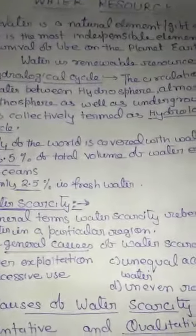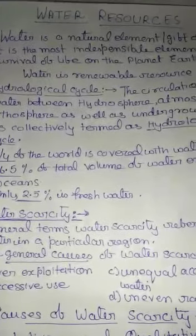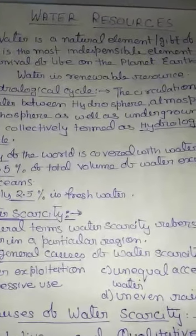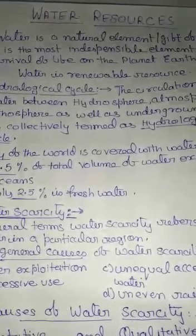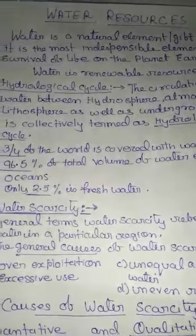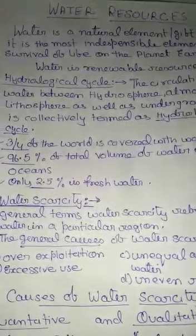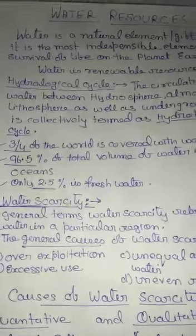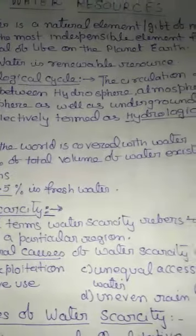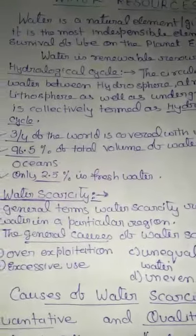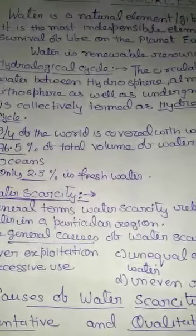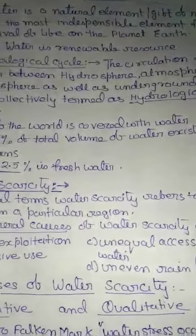For example, when we fetch a bucket of water from a river or pond, it remains a gift of nature. But when the same water is used for generating hydroelectricity, it changes into a water resource. Water is a natural element and the most indispensable element for survival of life on planet Earth.